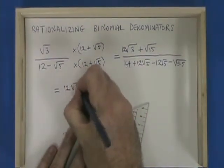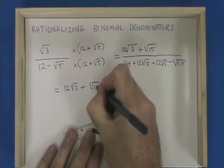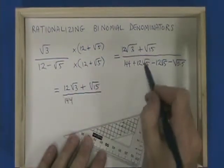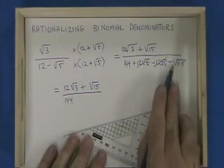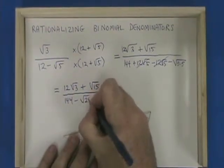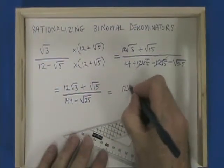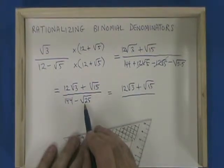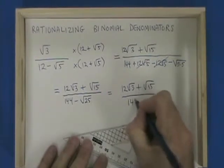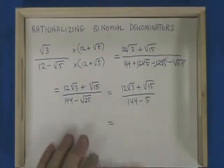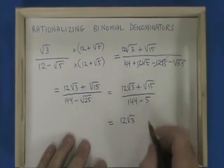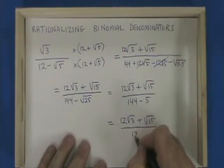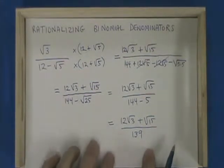Now we have 12 root 3 plus root 15. We have the 144. The minus 12 root 5 and plus 12 root 5 cancel, and we have minus the square root of 25. The square root of 25 is 5, so we have 144 minus 5. We're nearly finished. We have 12 root 3 plus root 15 over 139. There is no cancelling opportunity, so we are finished.